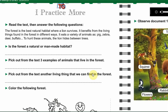Now we are going to practice more by reading the text and then answering the questions. The forest is the best natural habitat where a lion survives. It benefits from the living things found in the forest in different ways. It eats a variety of animals such as pig, zebra, deer, and buffalo. To hunt these animals, the lion hides between trees.